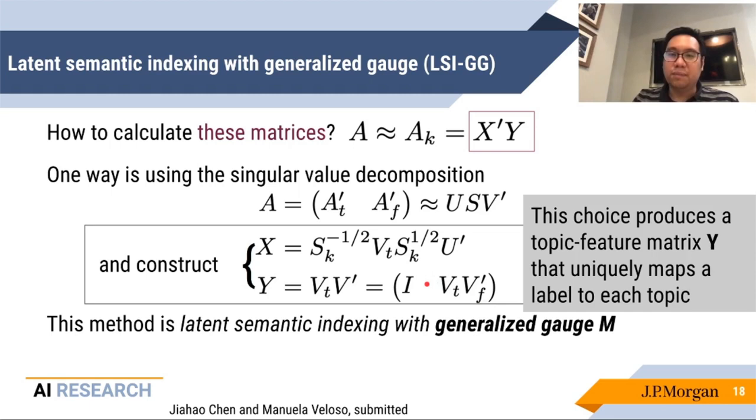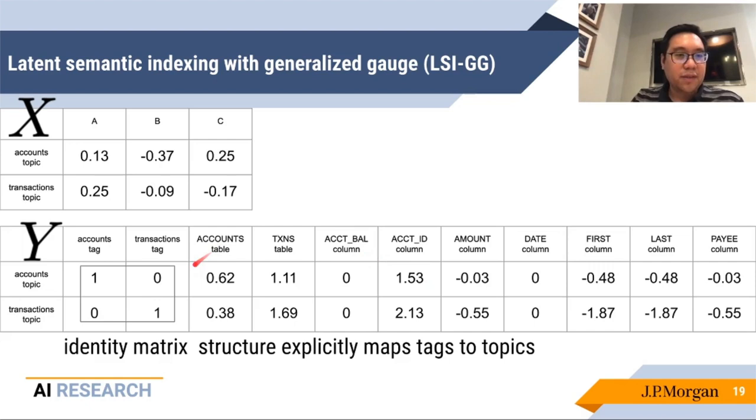Now, if we make this very somewhat odd-looking choice for x and y, we see that y has a very interesting structure here. In particular, we see that there is an identity matrix component, and then there's like the everything else matrix component. And we'll use this to our advantage to assign an interpretability to the topics that we get from this model. For a more concrete look at this, this is what we get for the toy problem that we get. What we see here is still the presence of some negative values, which we are still not quite sure how to interpret.